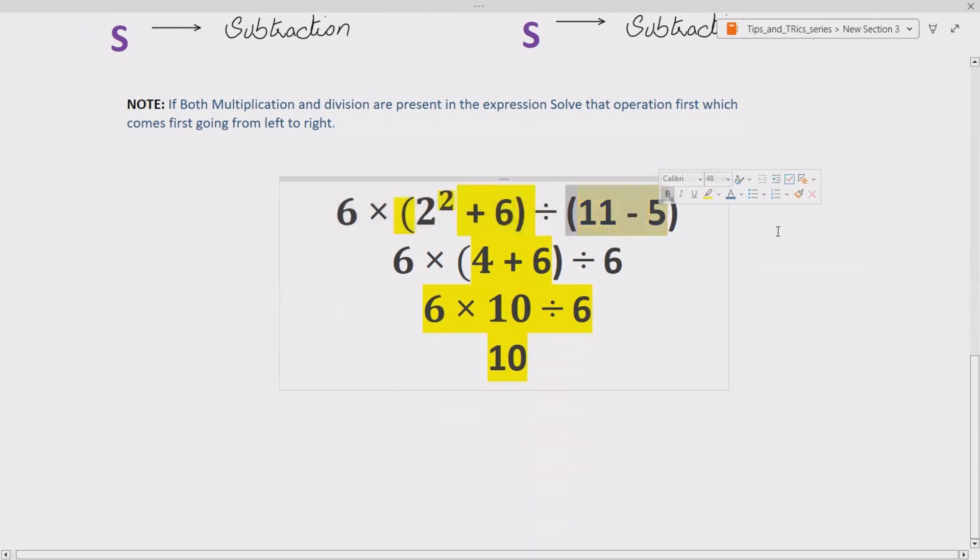So we can solve these two brackets simultaneously. 2 square gives us 4 plus 6. The bracket remains as it is divided by 11 minus 5 gives us 6. Now this bracket we solve again. 4 plus 6 gives us 10. So we have now 6 multiplied by 10 divided by 6.